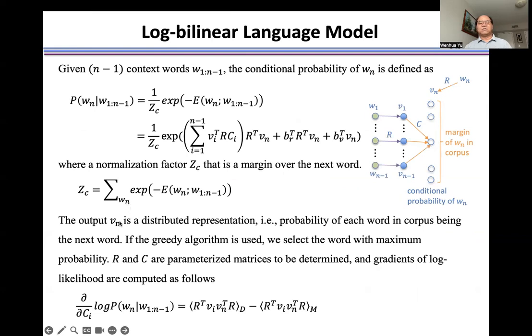The output Vn is a distributed representation, namely the probability of each word in corpus being the next word. If the greedy algorithm is used, we select the word with the maximum probability to be the next word.